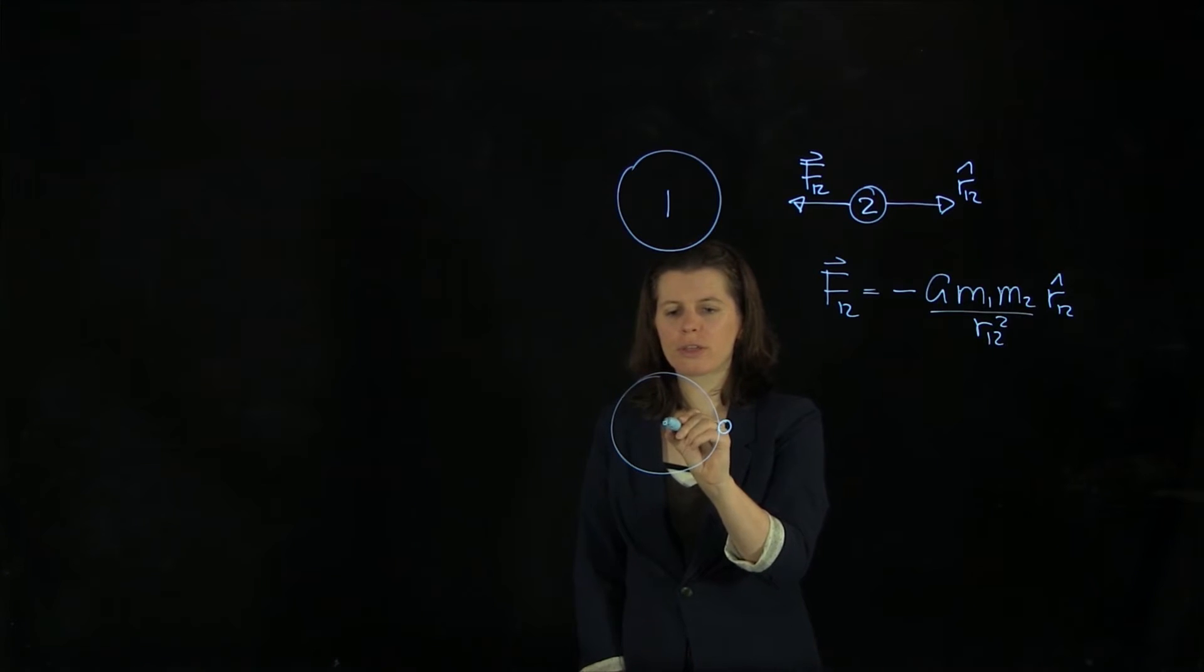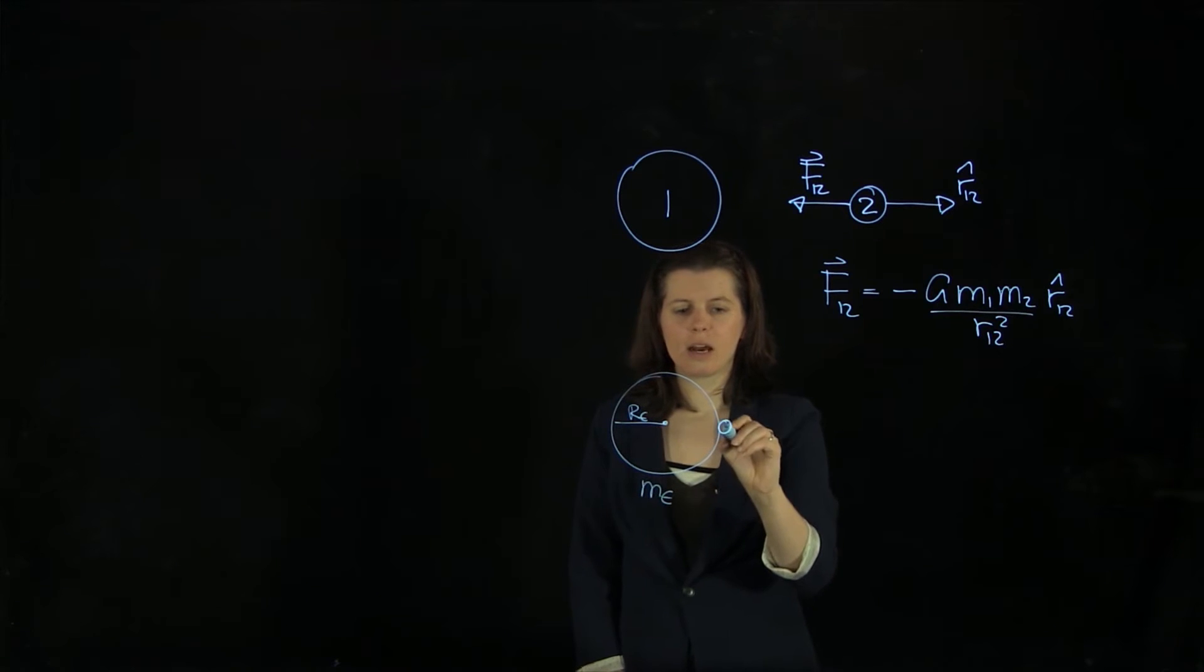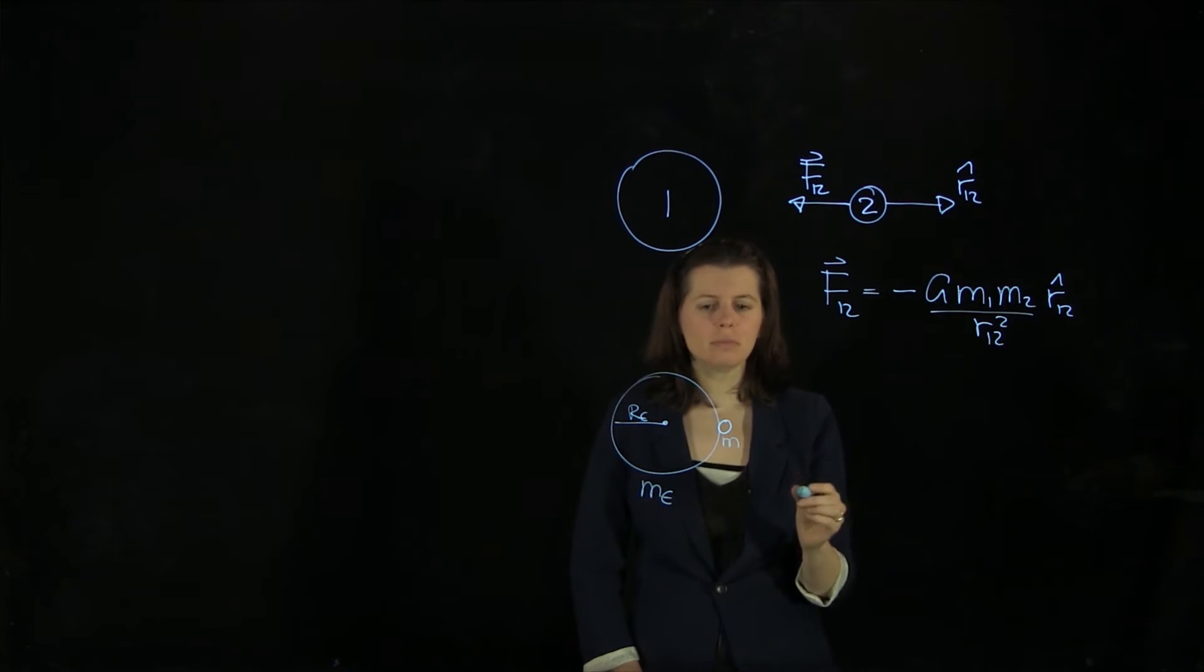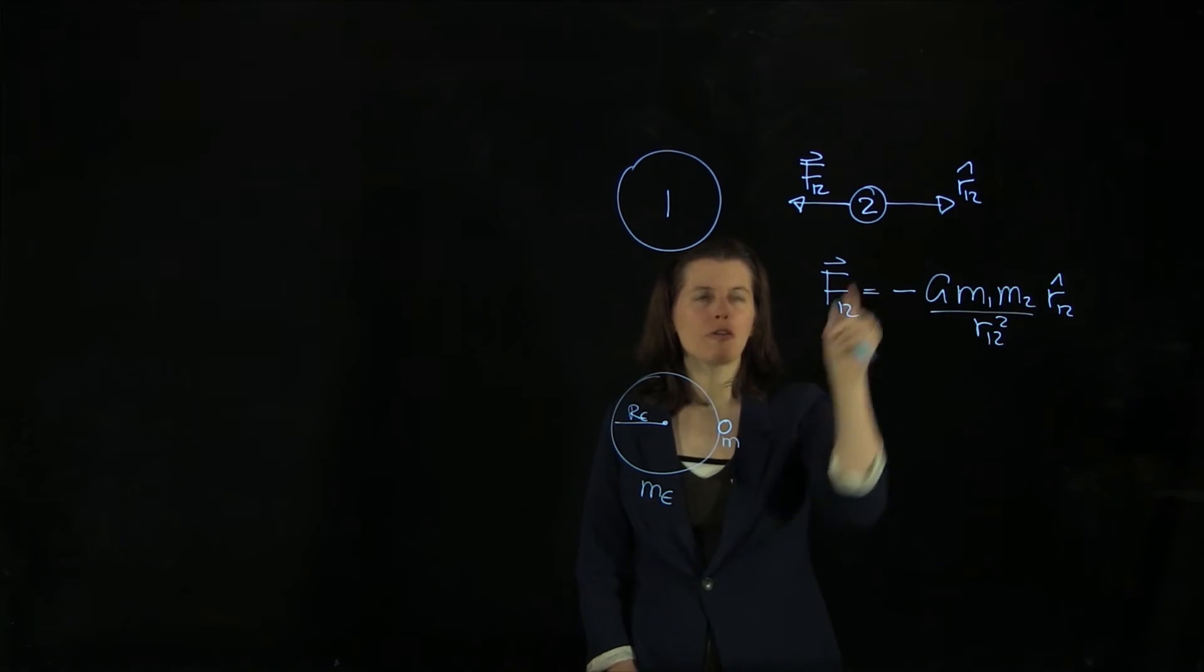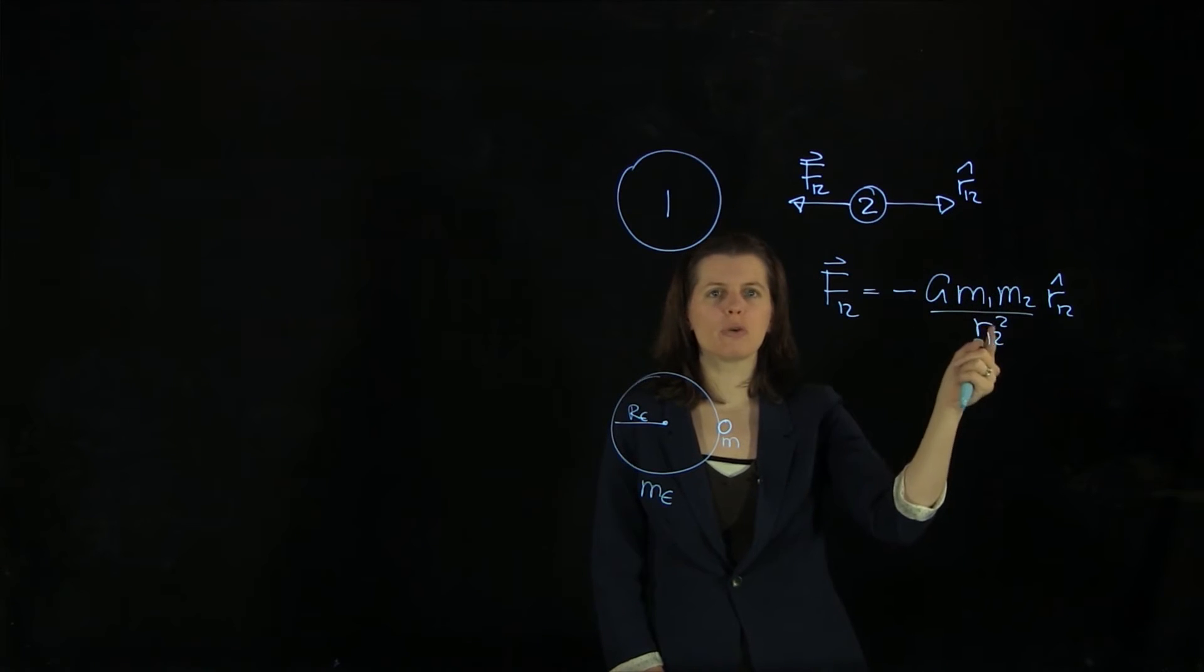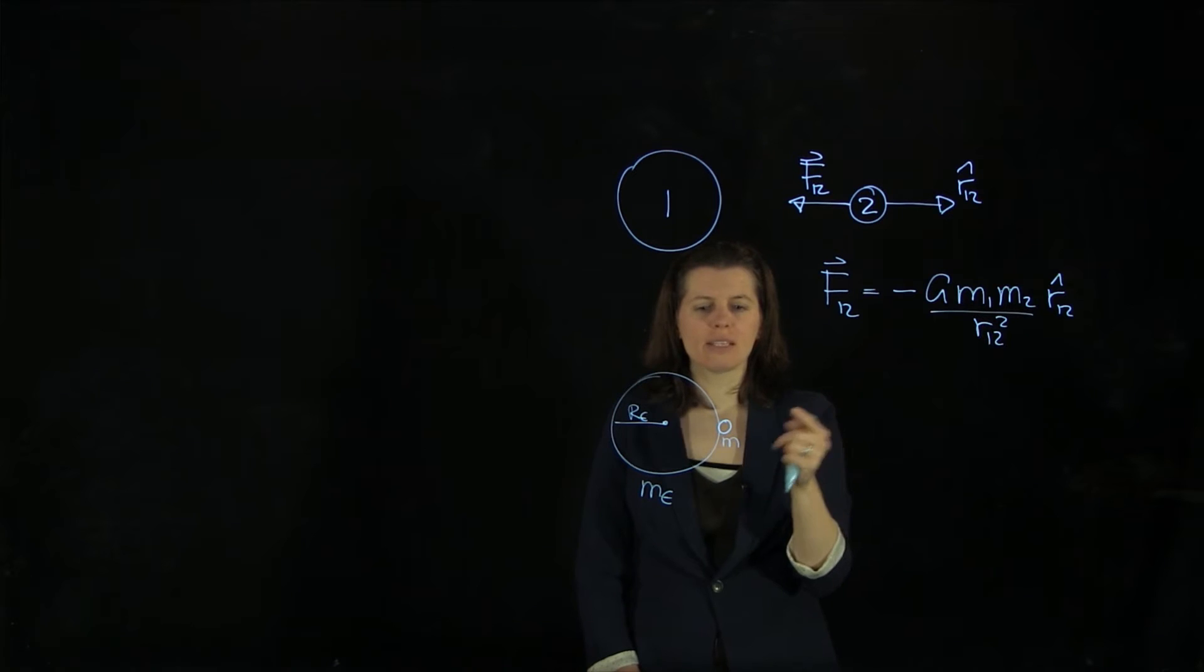and what is the gravitational acceleration that this moon rock on the surface of the Earth is experiencing. So here we have the Earth. Earth has one Earth radius, and it has an Earth mass, and our moon rock has the mass m. And we know from this exercise already that this gravitational force is acting on our moon rock as well. That hasn't changed.